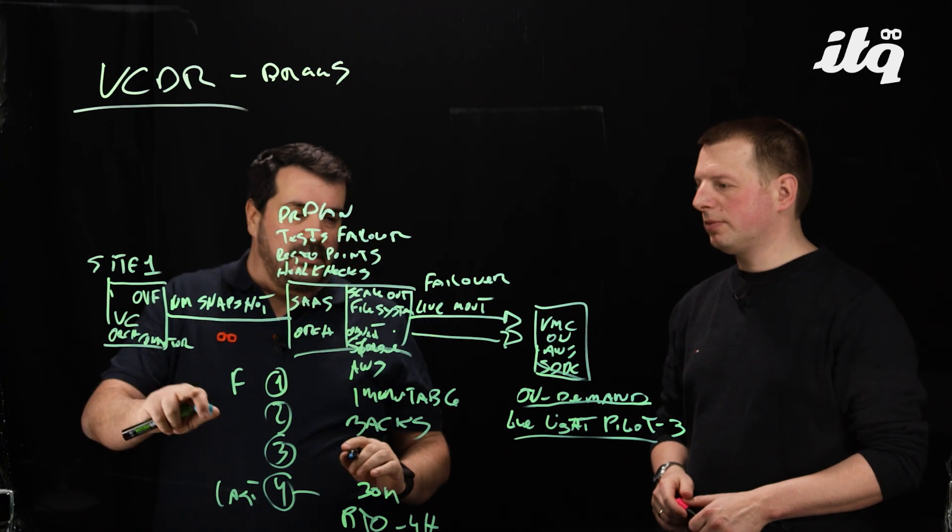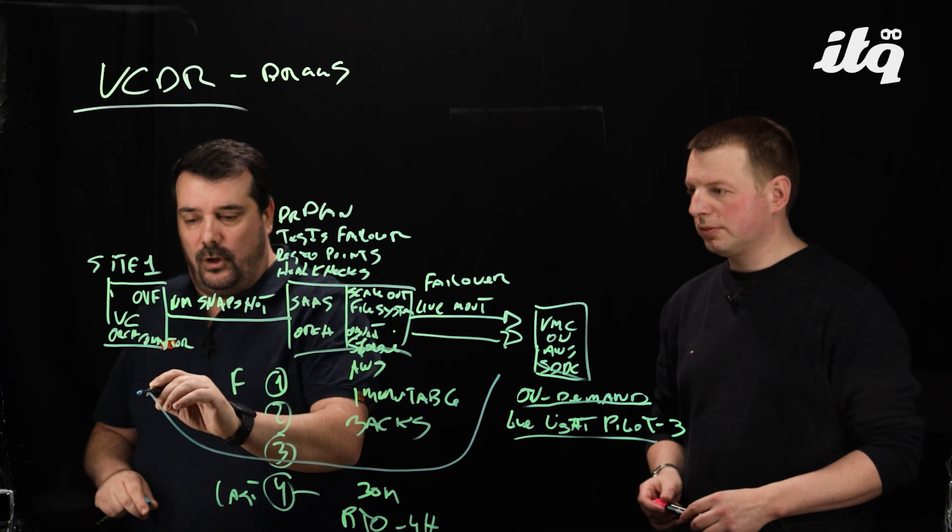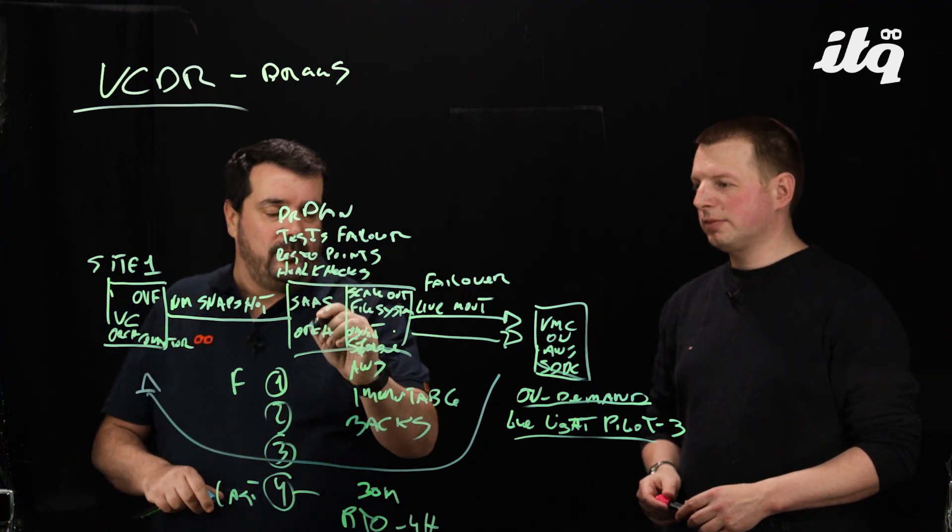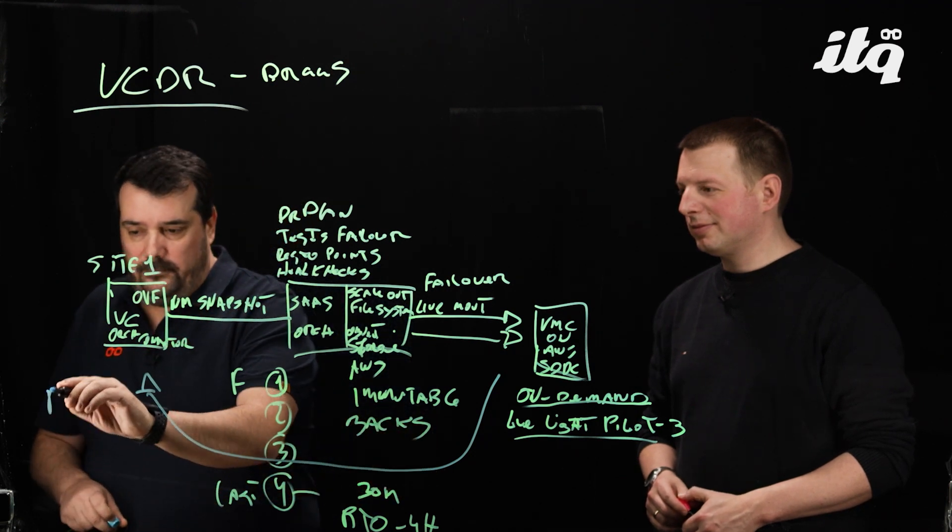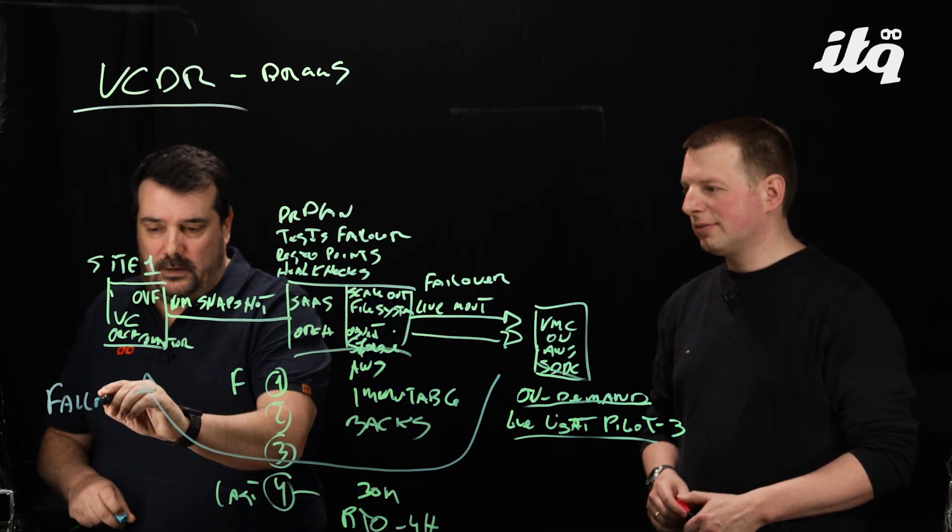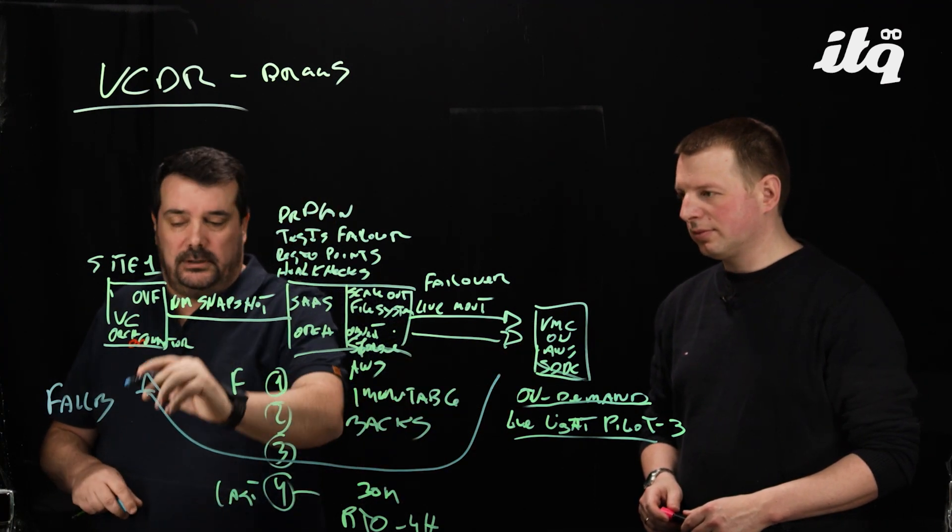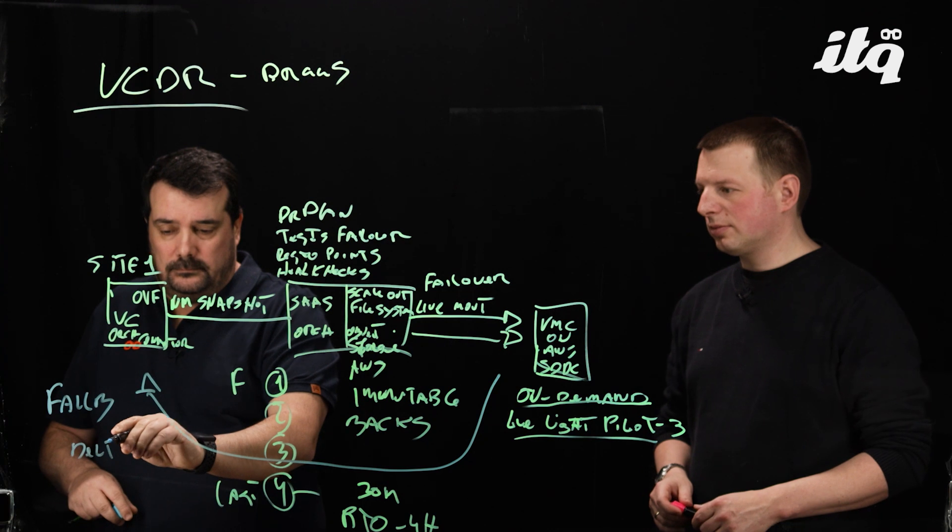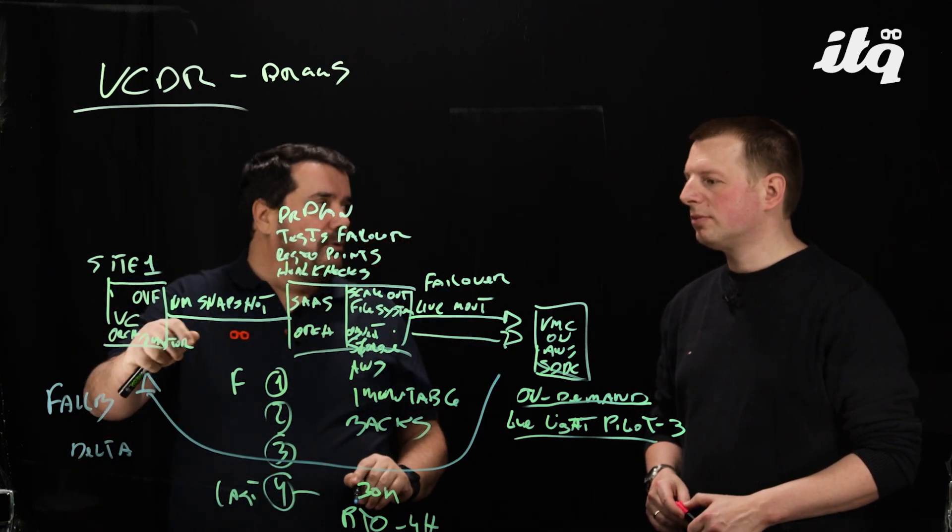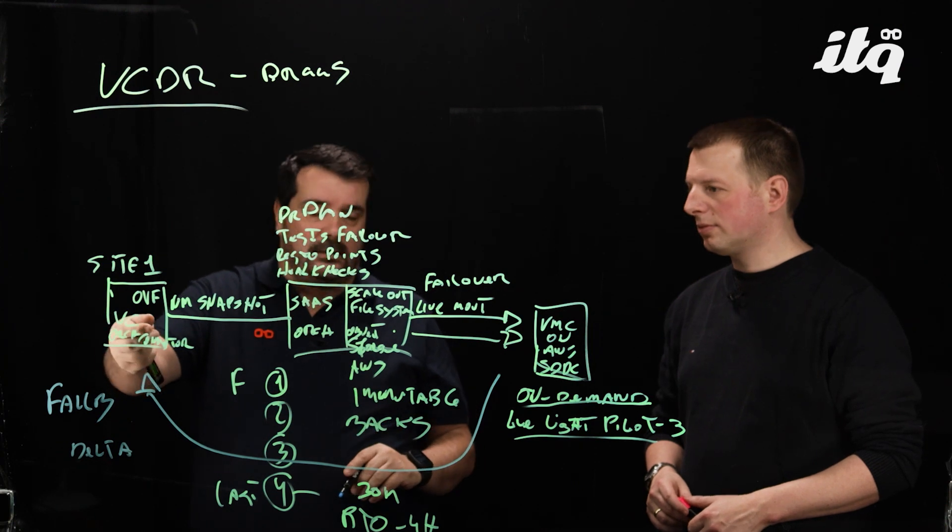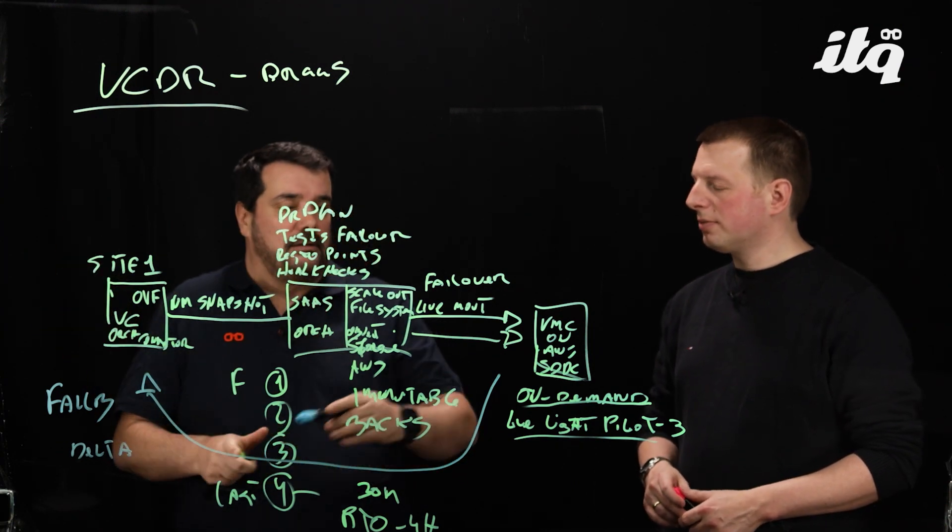So after you fix your problems on your site, all your infrastructure is ready to be used again. So then you launch from, again, from the orchestrator, you launch fail back. So this is, you will send all the data back to your infrastructure and all the VMs will be set and then you can power up and they will be here.